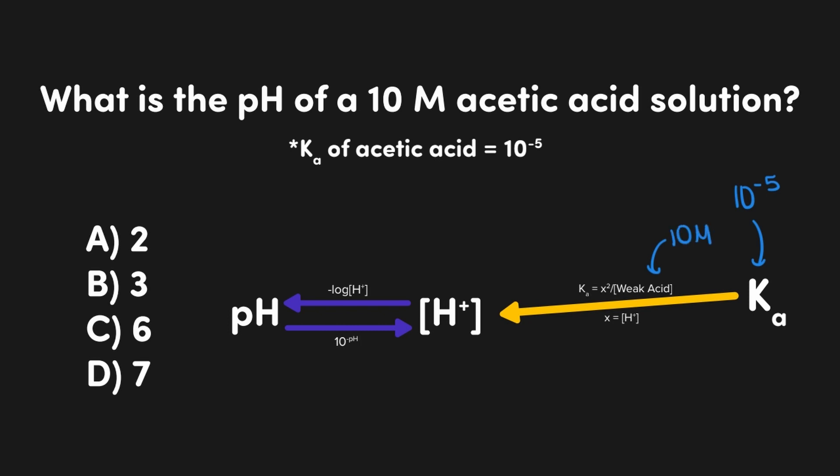Let's start by plugging all of the given values into the Ka equation here. That would be 10 to the negative 5 equals x squared over 10. Now it's simply a matter of solving this out. We'll go ahead and start by multiplying each side by 10 and that would give us 10 to the negative 4 equals x squared.